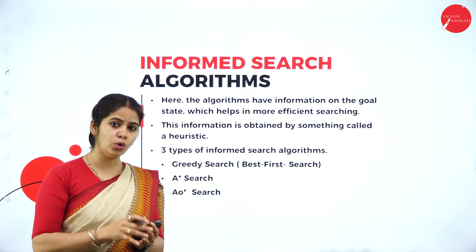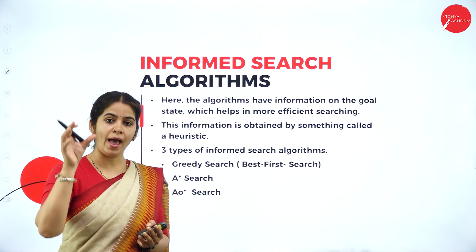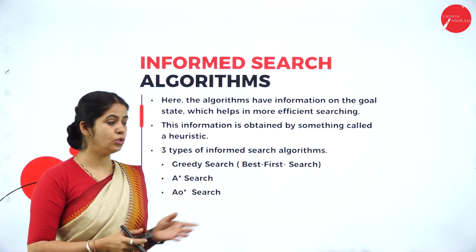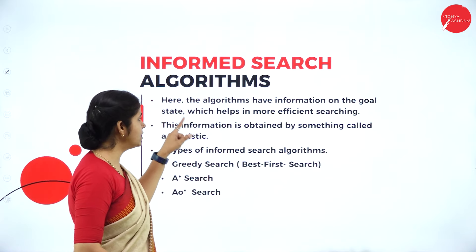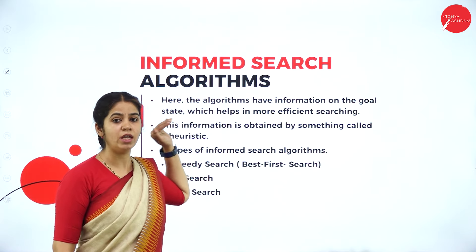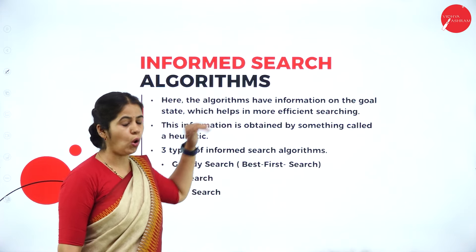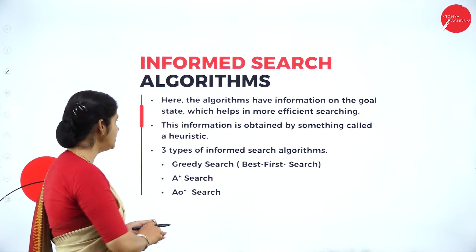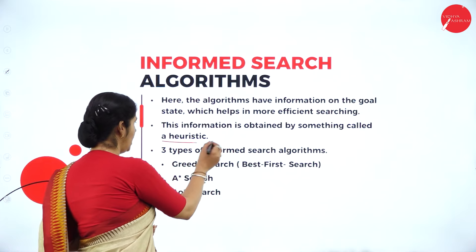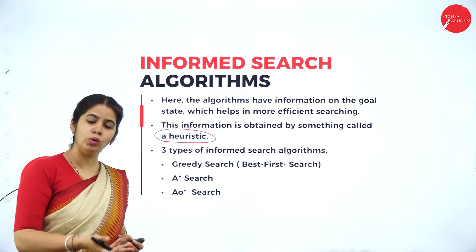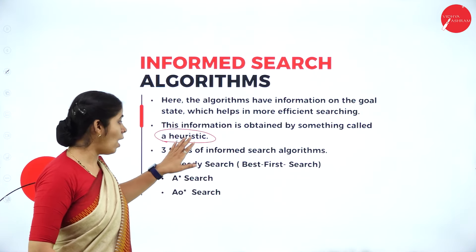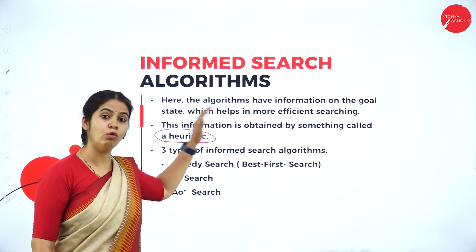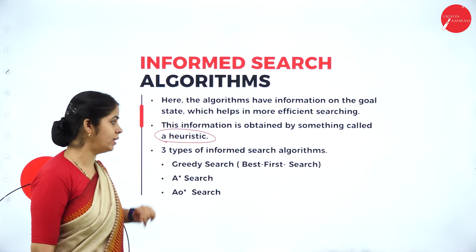When you know the goal where you have to reach, you can opt for any of these paths. You should have information about the goal state. This information is obtained through something called heuristic — how far the goal state is from the current state, how far we are from the current state to the goal state.